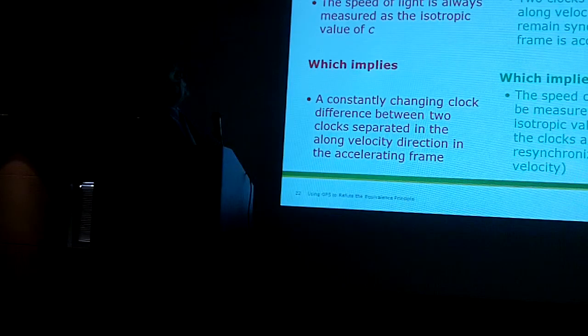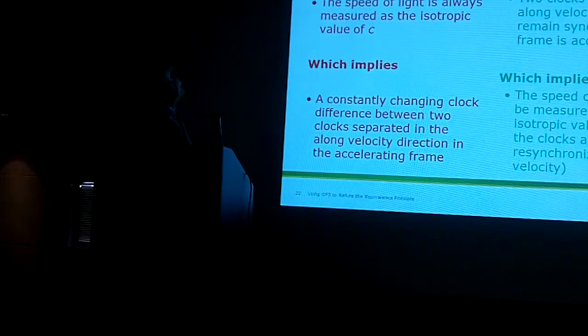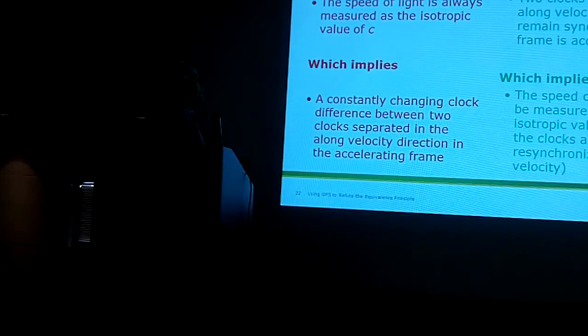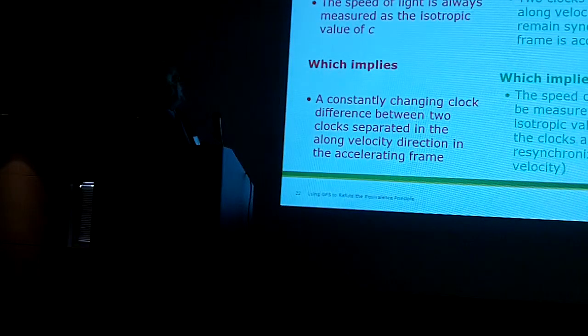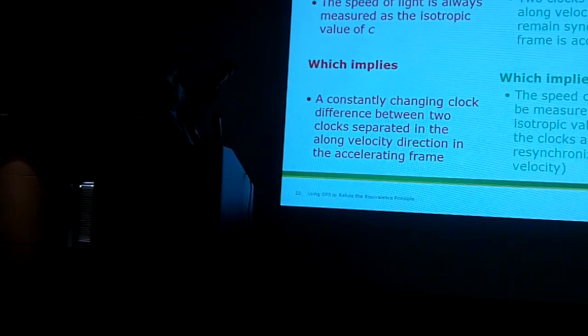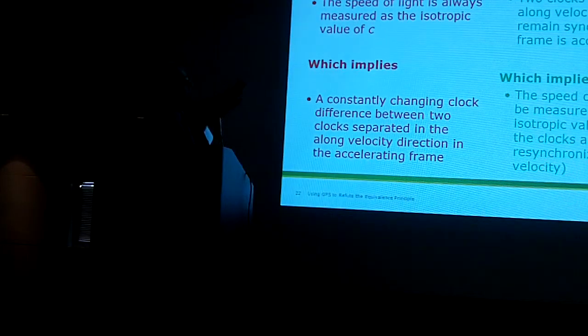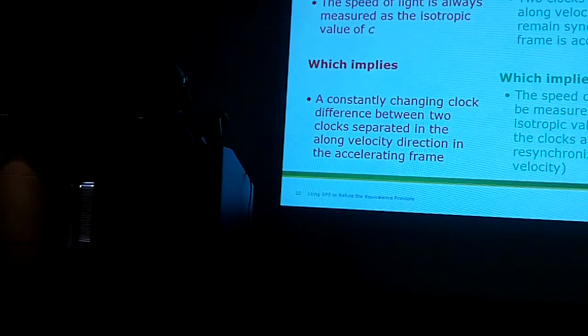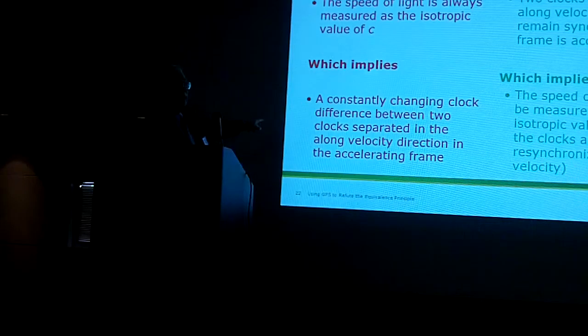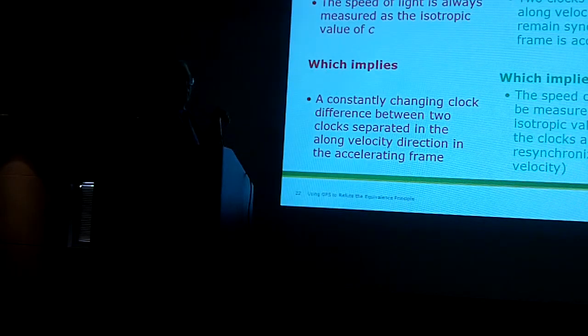Again, we're probably a little out of order, but let's go ahead. The ILT requires the speed of light is always measured as the isotropic value of C, whereas the other one, the two clocks separating in a long velocity direction, will remain synchronized as the frame is accelerated.